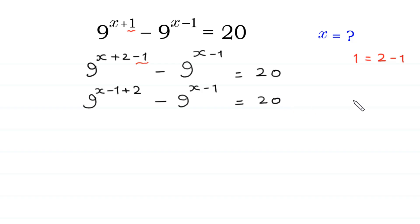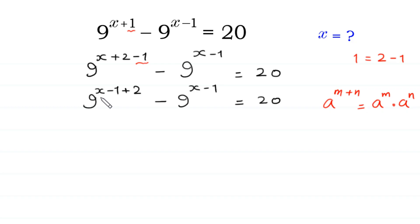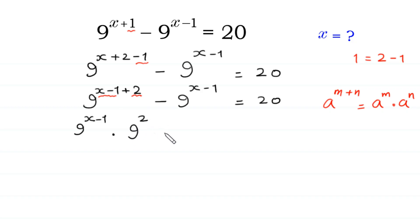Now, according to the property of exponents, a to the power m plus n is equal to a to the power m times a to the power n. We can write 9 to the power x minus 1 plus 2 as 9 to the power x minus 1 times 9 to the power 2, minus 9 to the power x minus 1, equals 20.